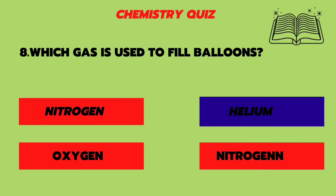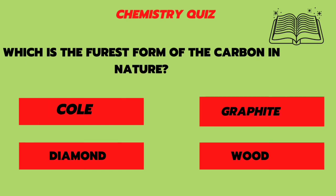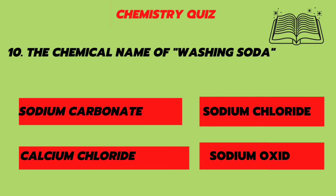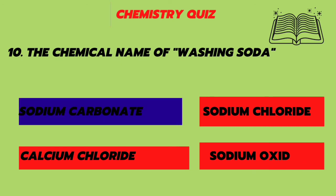Ninth question: which is the purest form of carbon in nature — diamond? Yes, diamond is the answer. Tenth question: the chemical name of washing soda — sodium carbonate, sodium chloride, or sodium oxide? The answer is sodium carbonate.